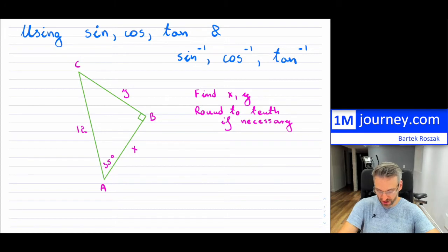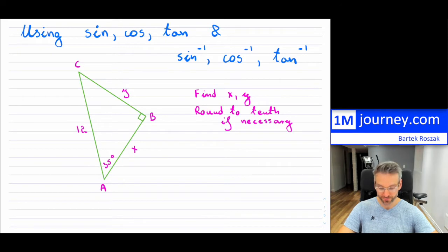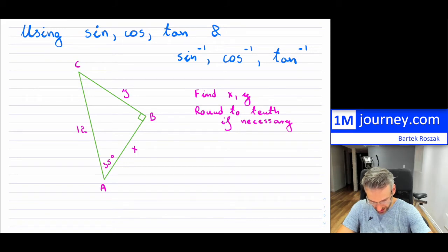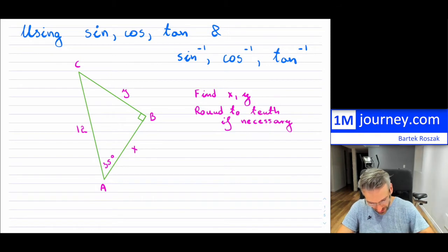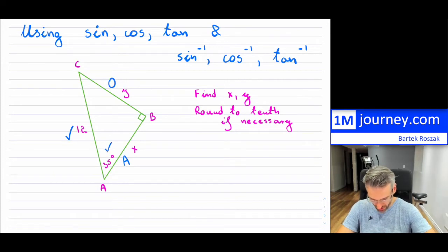The first example is a right angle triangle. I know angle A and I'm trying to find X and Y, rounding to the tenth if necessary. Because we have a right angle triangle, we can utilize sines, cosines, and tangents. This side is the hypotenuse, this one is the adjacent side, and this one is the opposite side to the angle, which is 35 degrees.